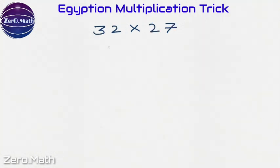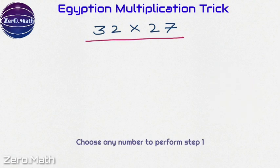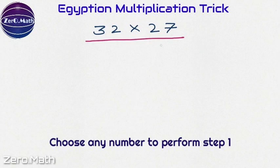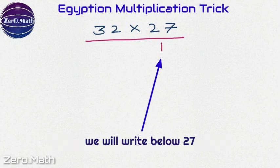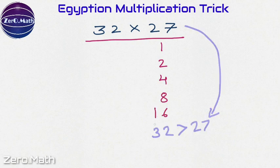I hope you understand how this method works. Let us solve another multiplication sum, 32 into 27, using the same method. So let's write down number 1 below any of the numbers. I will write it below 27 because doubling 32 would be easy for me. So let's write down 1, 2, 4, 8, 16. I won't write 32 because 32 is greater than 27.